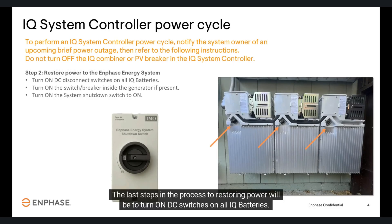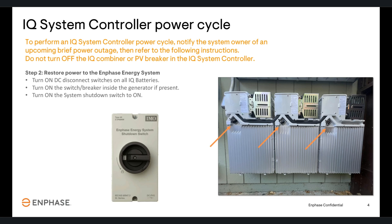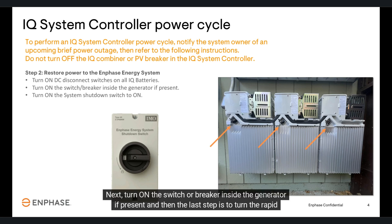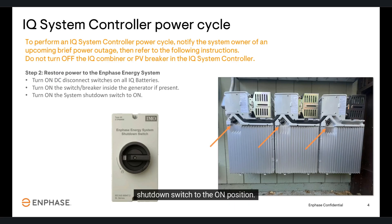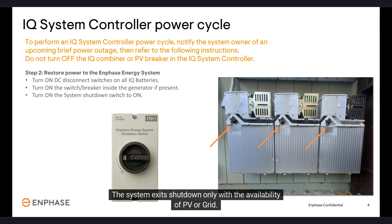The last steps in the process to restoring power will be to turn on the DC switches on all IQ batteries. Next, turn on the switch or breaker inside the generator if present. Then the last step is to turn the rapid shutdown switch to the on position.